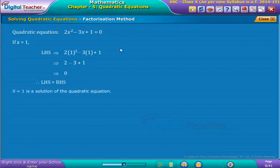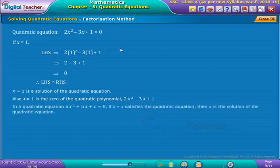Therefore, x is equal to 1 is the solution of the Quadratic Equation. Also, x is equal to 1 is the zero of the Quadratic Polynomial 2x² minus 3x plus 1.